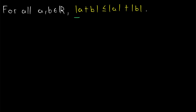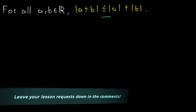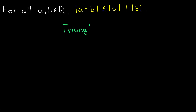The absolute value of the sum of any two real numbers is less than or equal to the sum of the absolute values of those real numbers. This is called the triangle inequality theorem, and we'll be proving it in today's Wrath of Math lesson.